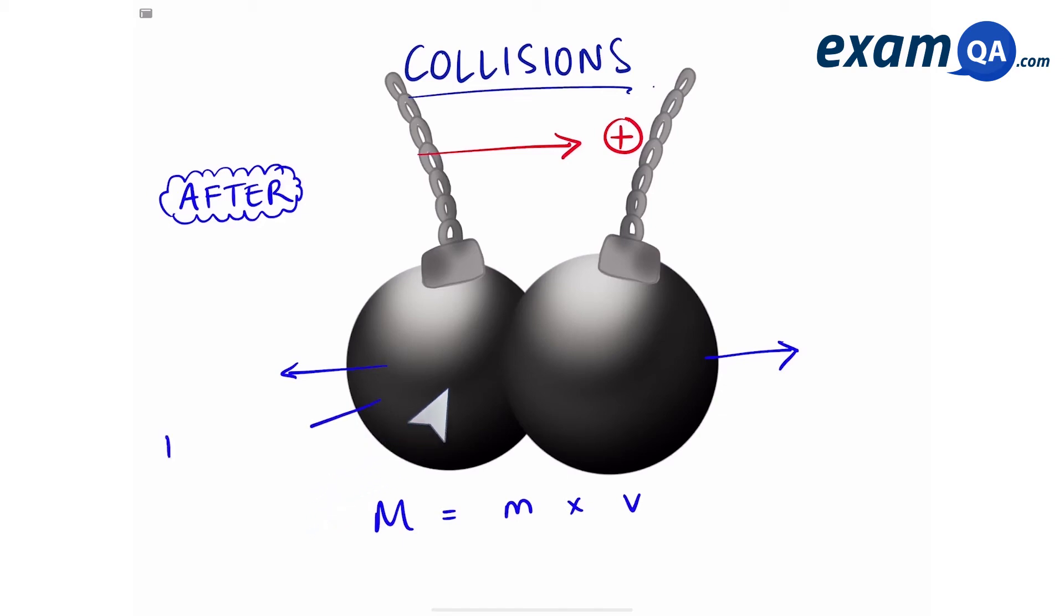Now remember, we said the ball on the left has a mass of 1,000 kilograms and the ball on the right has a mass of 1,200 kilograms. Since now they are one unit, that means they have a combined mass of 2,200 kilograms. Now we're going to times that by their velocity. Since we want to work that out, we can just call that a V for now.